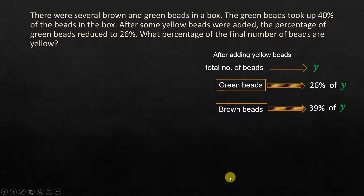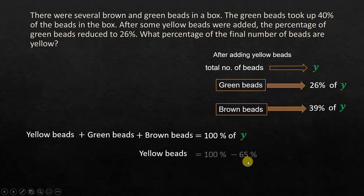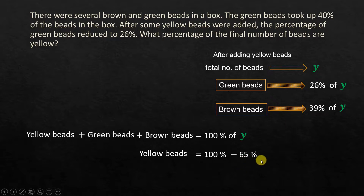We already know green beads is 26% of y and brown beads is 39% of y, where y is the total number of green, brown, and yellow beads. Yellow beads plus green beads plus brown beads must equal 100% of y. Green beads is 26%, brown beads is 39% — adding both gives 65%. Subtracting 65% from 100% gives the remaining yellow beads, which is equal to 35% of y.